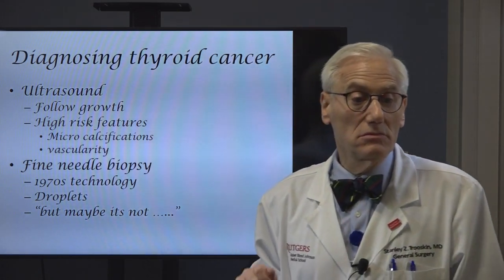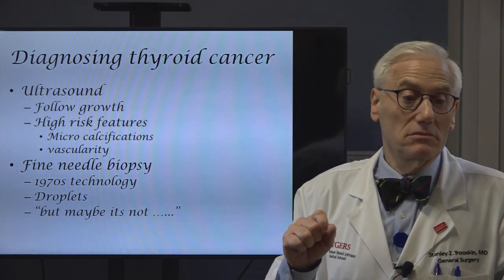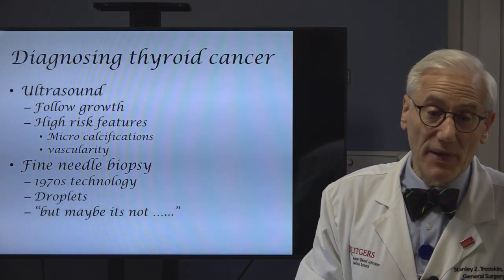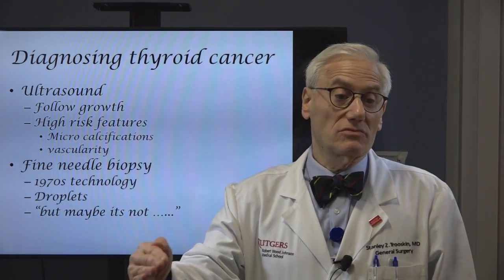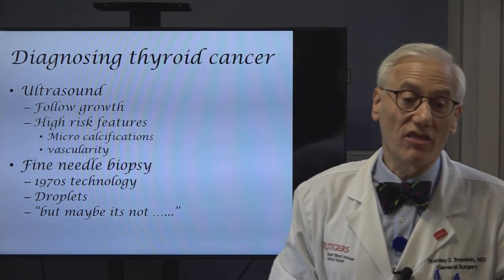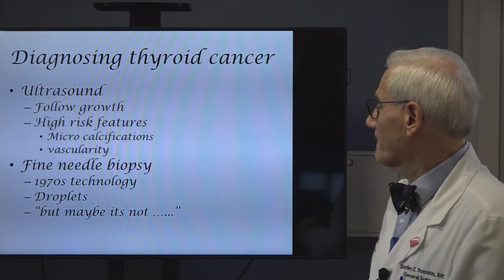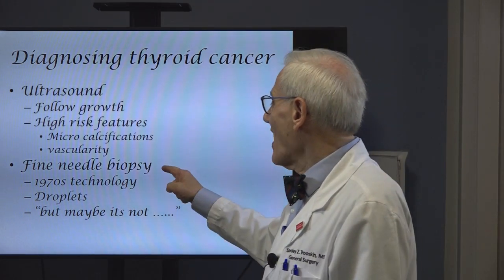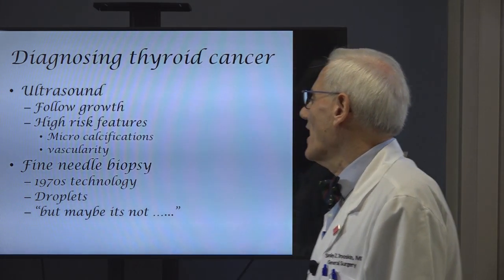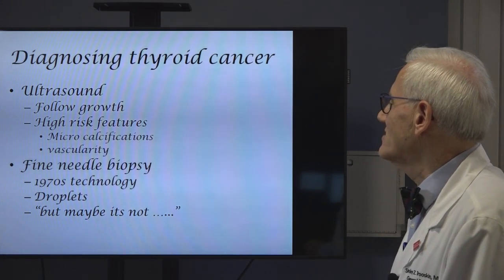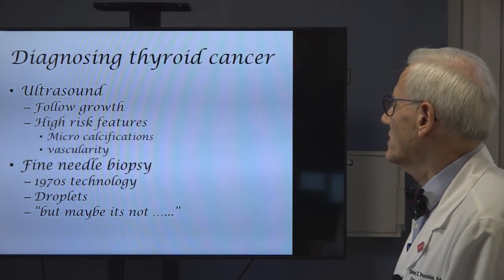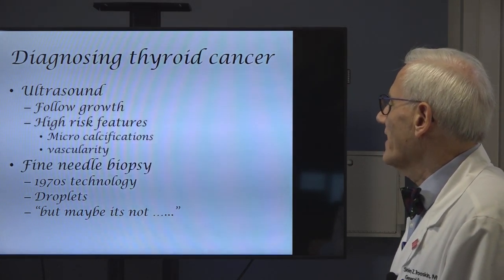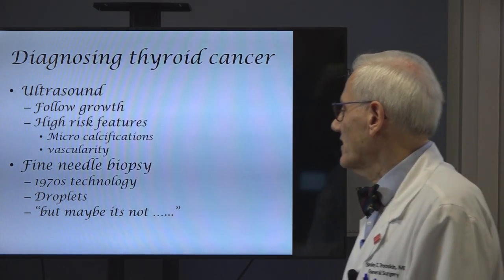There are certain features you can see on ultrasound that suggest a higher likelihood of being cancer. One of them is if you see these little white dots called microcalcifications — one-third of the time, 33%, there's going to be papillary thyroid cancer in the neighborhood. Or you can look at blood vessels, and if there are a lot of blood vessels on the inside, about one-third of the time there's going to be papillary thyroid cancer. So if you saw that, you'd say it's not five percent for this patient — it's 33 percent.